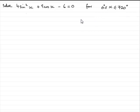Now in the first part of the question we showed that we could re-express this as 4 cos squared x. Let's just write this down. So we had 4 cos squared x minus 9 cos x plus 2 equals 0.